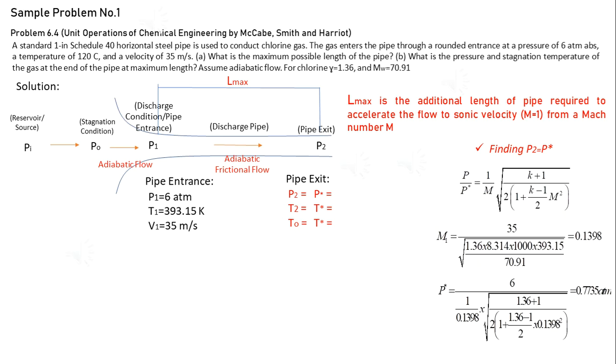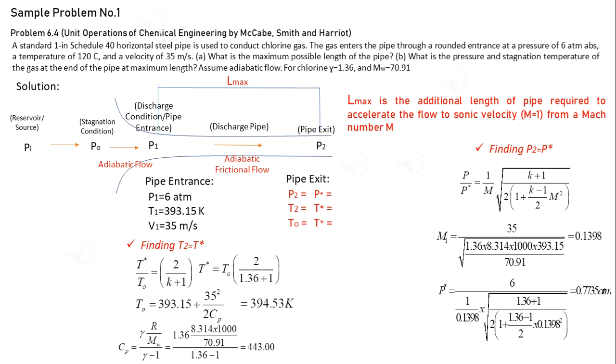And finding T2, we have the equation, but we need first to solve for other variables. So from the basic equations we have, remember I presented these basic equations from part 1 of this video, T2 is equals to 334.35 kelvin.